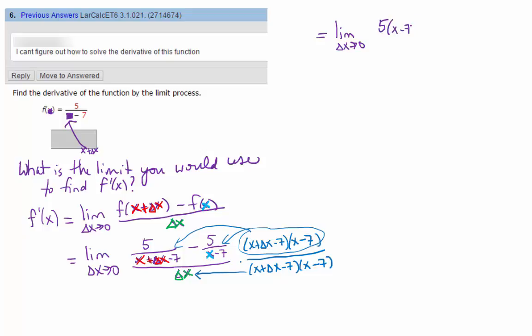Minus 5 times what? x plus delta x minus 7. But in the denominator, we just write the product. Don't distribute it out, because leaving it factored is useful.